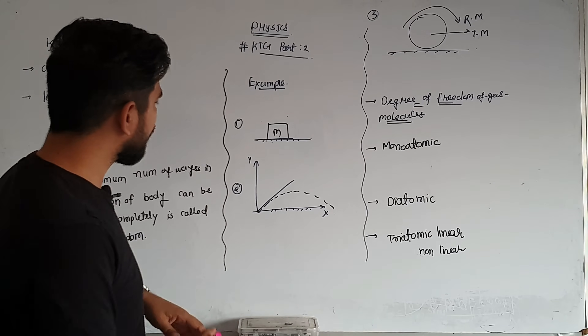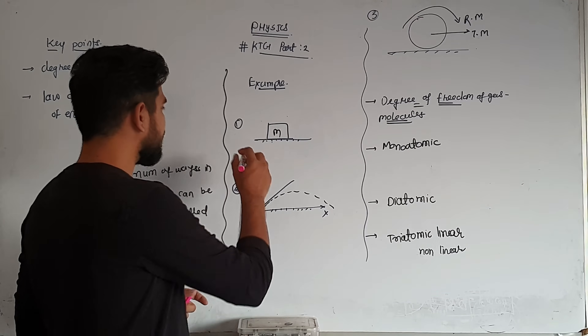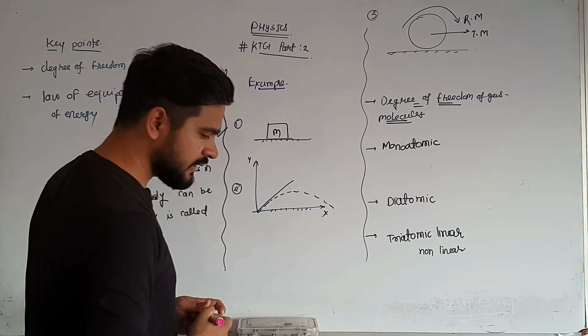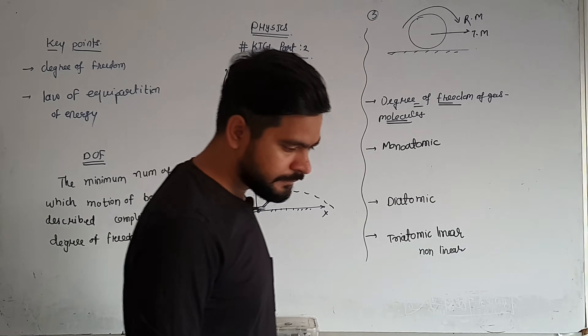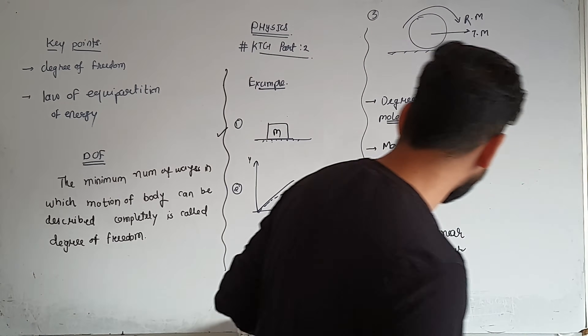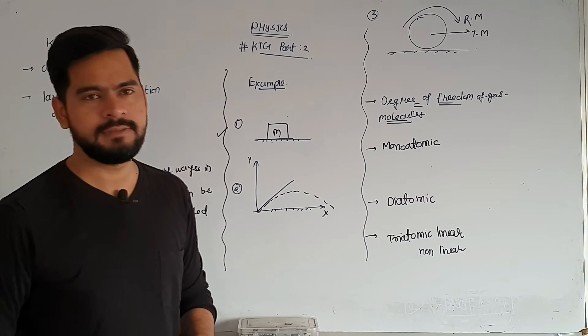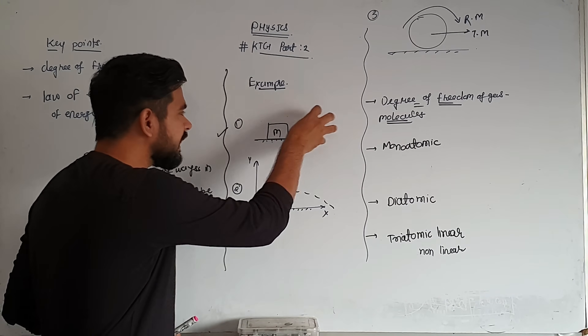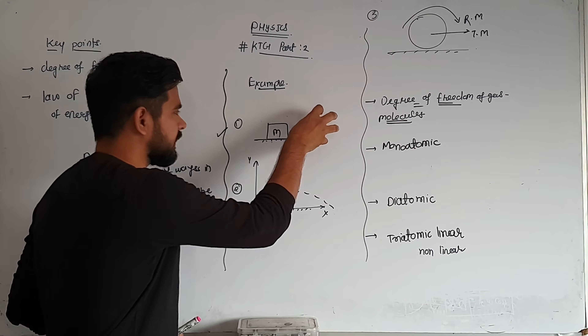For example, if you have a block kept on a surface, you can see that the block can move in different directions. For a block on a plane, it can move in the x-direction and y-direction.